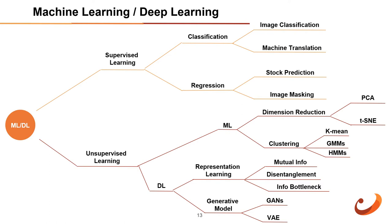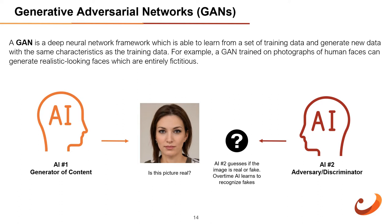GANs — Generative Adversarial Networks — are deep neural network frameworks able to learn from training data and generate new data with the same characteristics. For example, a GAN trained on photographs of human faces can generate realistic-looking faces that are entirely fictitious. A GAN has two parts: the generator learns to generate plausible data, while the discriminator learns to distinguish fake data from real data and penalizes the generator for producing implausible results. When training begins, the generator produces obviously fake data, and the discriminator quickly learns to identify it as fake.